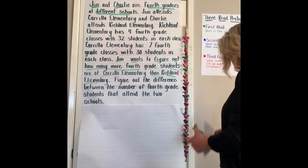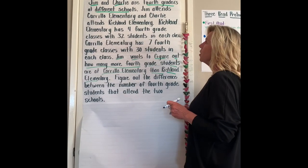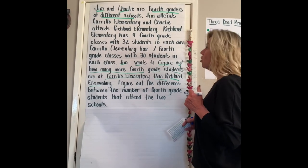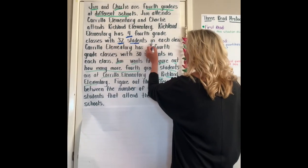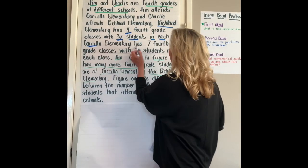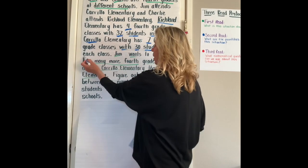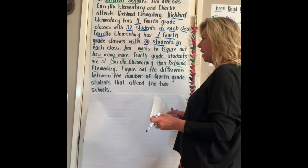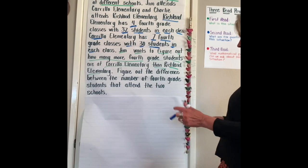So let's read for a second time and focus on the quantities now. Richland Elementary has four fourth grade classes with 32 students in each class. Carrillo Elementary has seven fourth grade classes with 30 students in each class. Jim wants to figure out how many more fourth grade students are at Carrillo Elementary than Richland Elementary. Figure out the difference between the number of fourth grade students that attend the two schools.